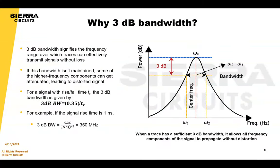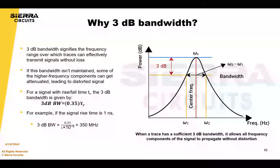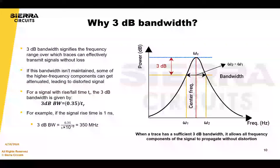3 dB bandwidth signifies the frequency range over which the transmission line can effectively transmit signals without loss. All signal frequency components propagate without distortion when the trace has a sufficient 3 dB bandwidth. If the trace bandwidth isn't maintained, some of the higher frequency components of the signal might get attenuated. The 3 dB bandwidth is calculated by dividing 0.35 by the signal rise time, and an example is given below.